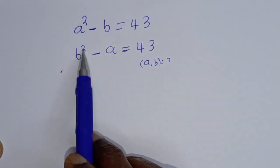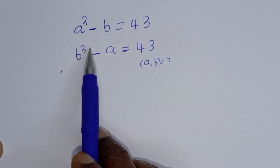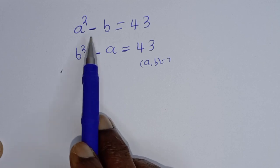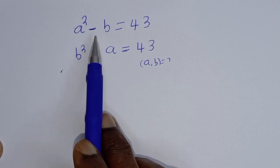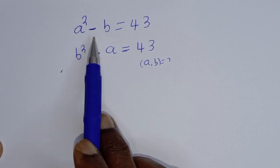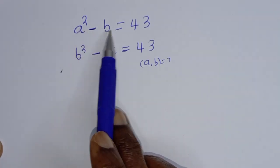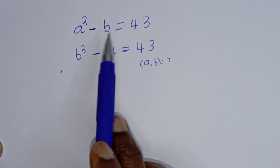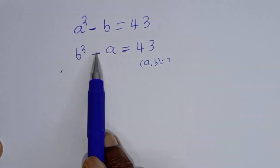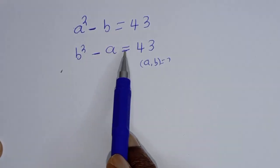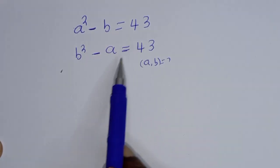Hello, how to solve for A and B from this given math Olympiad algebra problem. A squared minus B is equal to 43, and B squared minus A is equal to 43.